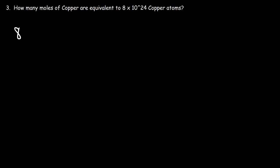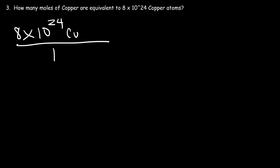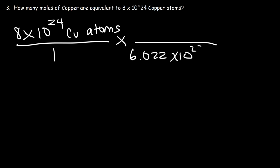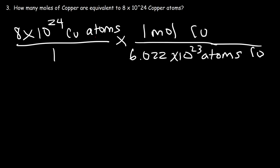Starting with 8 times 10 to the 24 copper atoms and converting: there are 6.022 times 10 to the 23 atoms of copper per 1 mole of copper. So to convert from atoms to moles, simply divide by Avogadro's number. The answer for this example is 13.28 moles of copper.